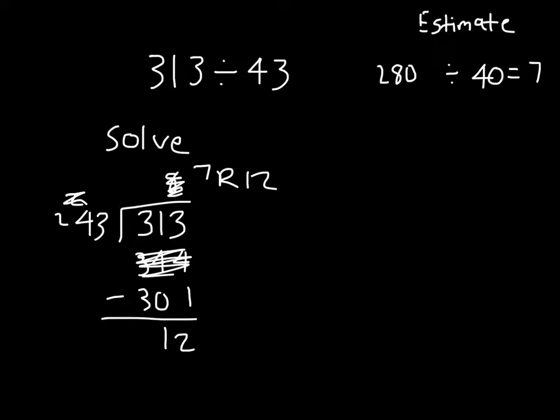Typically I'd erase, but for some reason the eraser wasn't working. Then I run my check. Take my divisor, which was 43. Multiply it by my answer, which was 7. 7 times 3 is 21. 1, 1, regroup the 2.